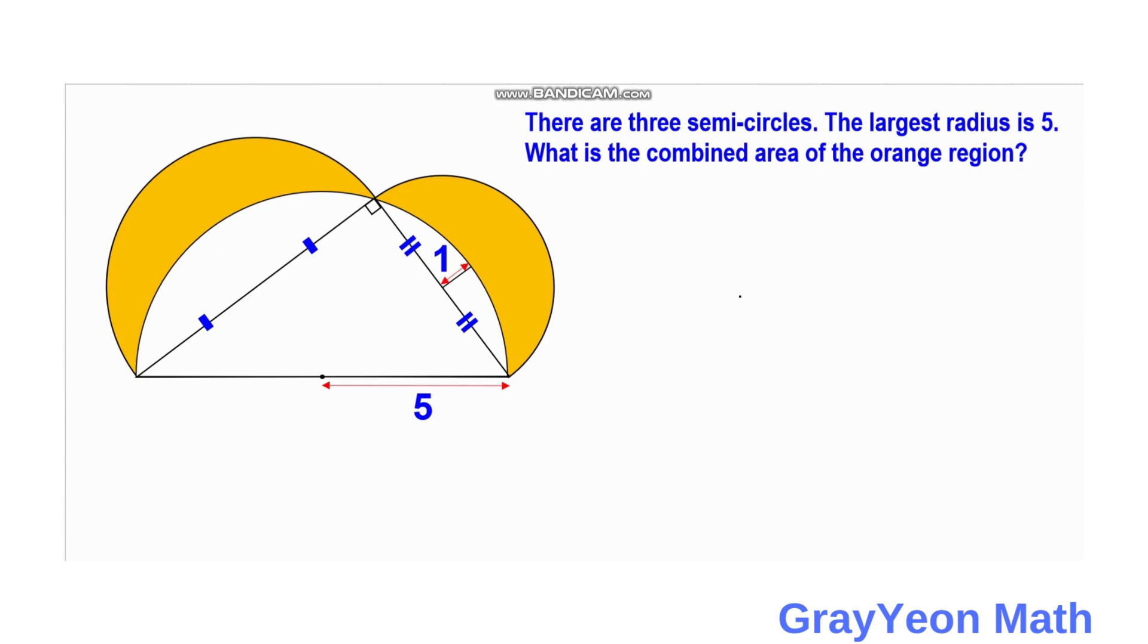Okay, so first thing that we have to do is we need to label the lengths that we need or the dimensions in general. So this length, let us call this diameter as A. And this length, let us call this diameter, which is also the leg of this right triangle inscribed in the semicircle as B. And we call this diameter of the largest semicircle as C.